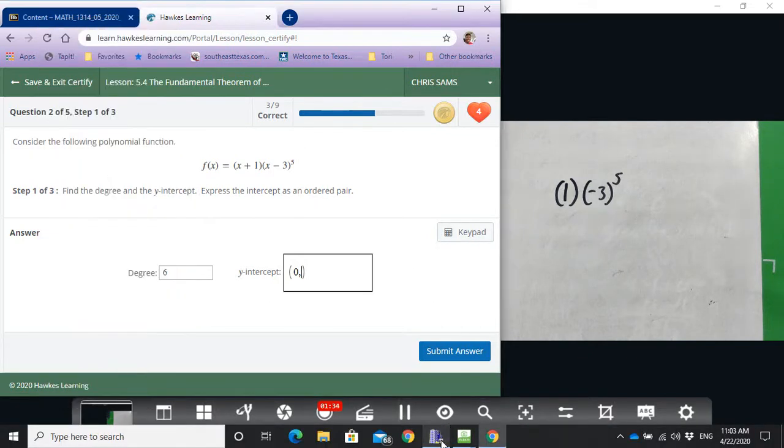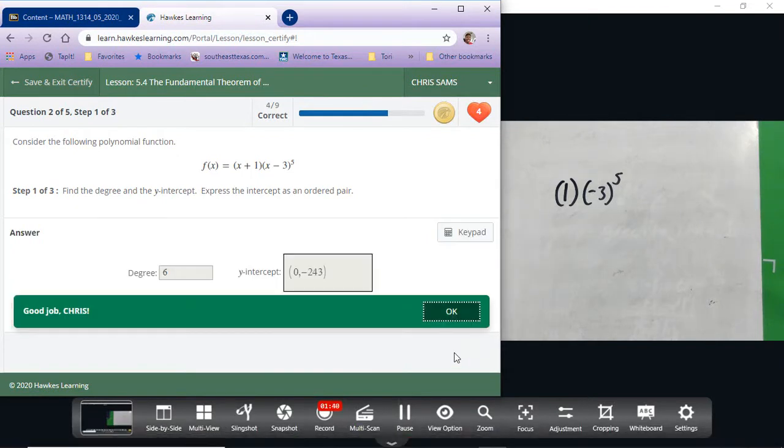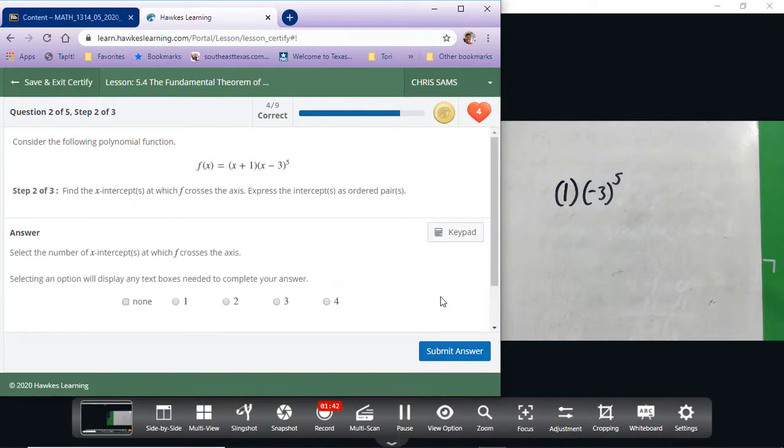Alright, so negative 243 is our y-intercept. Alright, part two: which x-intercepts will cross? So remember, odd degrees cross.